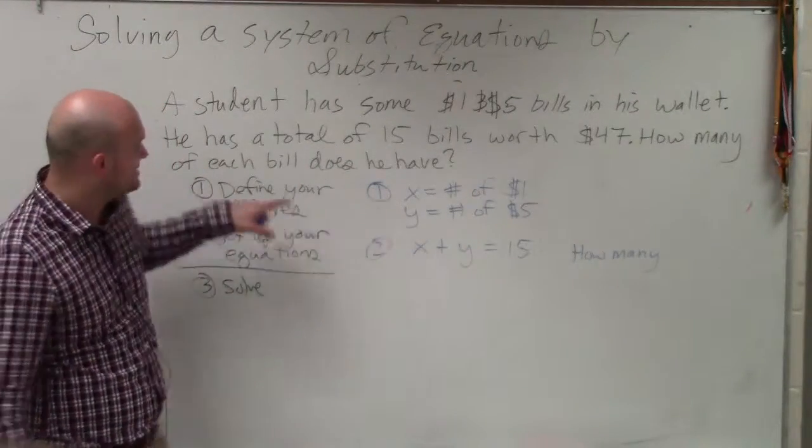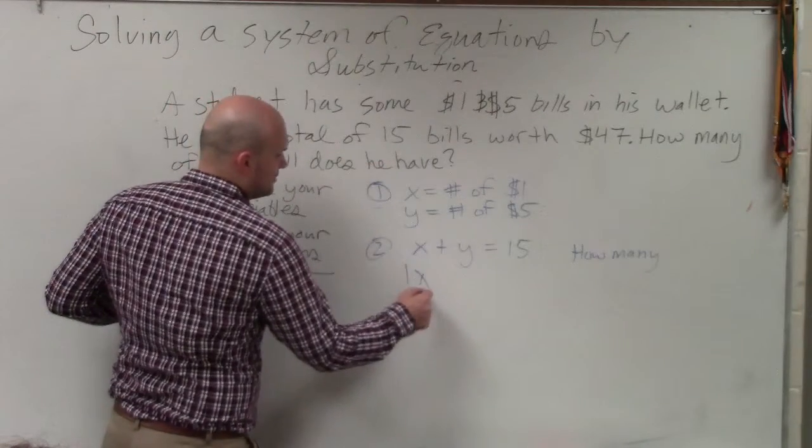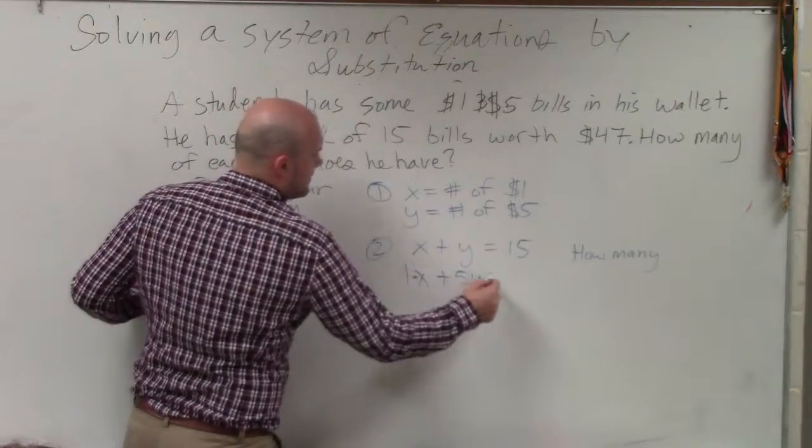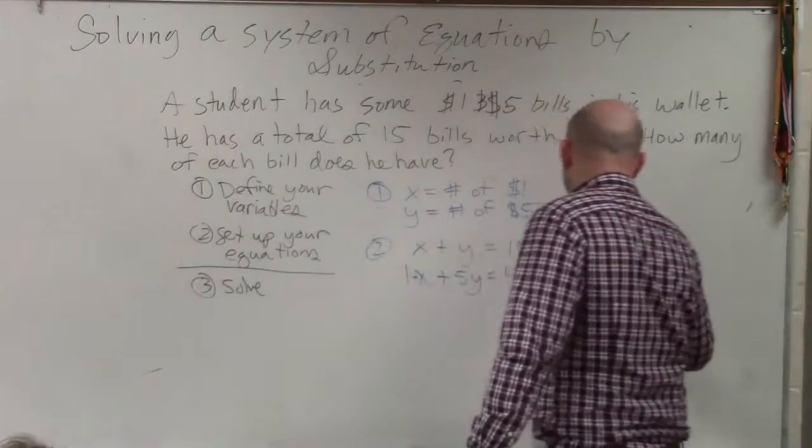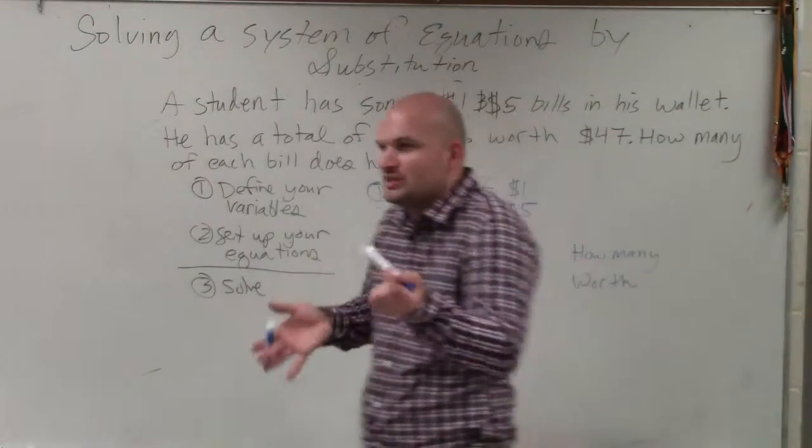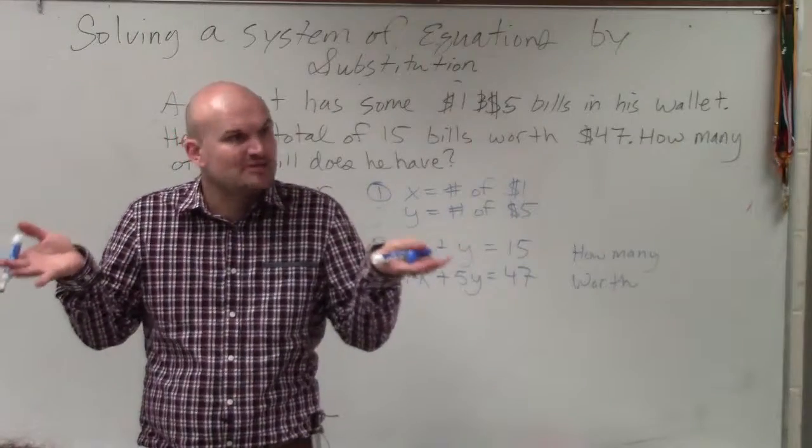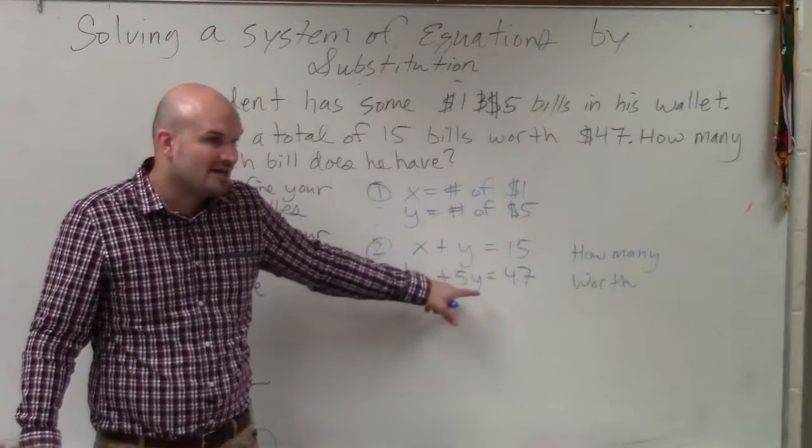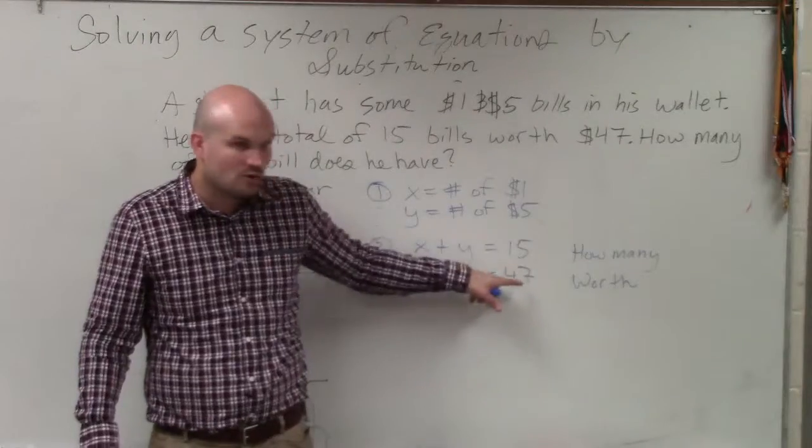And then the next one is the worth is $47. Well, each $1 bill has a worth of $1. Each $5 bill has a worth of $5. And that equals $47. Now, I'm not going to use the dollar signs, but what I want you to understand is this is how much they're worth. So there's two different equations that represent totally two different things. One, x plus y equals 15, just represents how many bills he has. And the other one represents their worth. Each y, each $5 bill is worth $5. Each $1 bill is worth x dollars. And their total worth is $47.